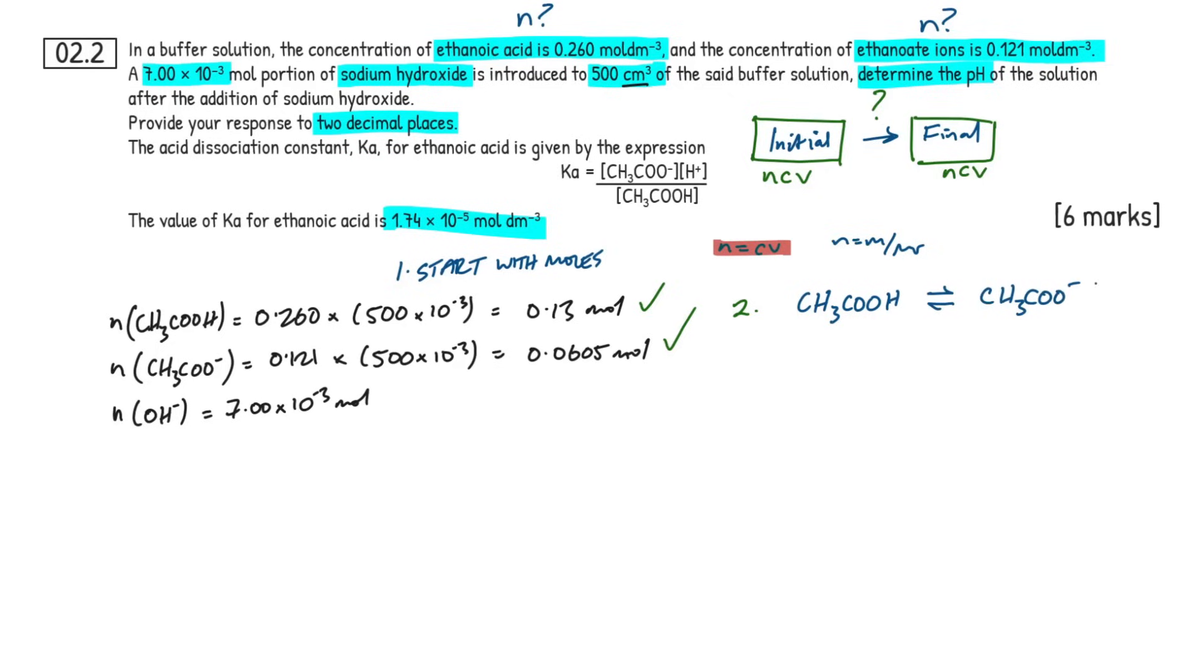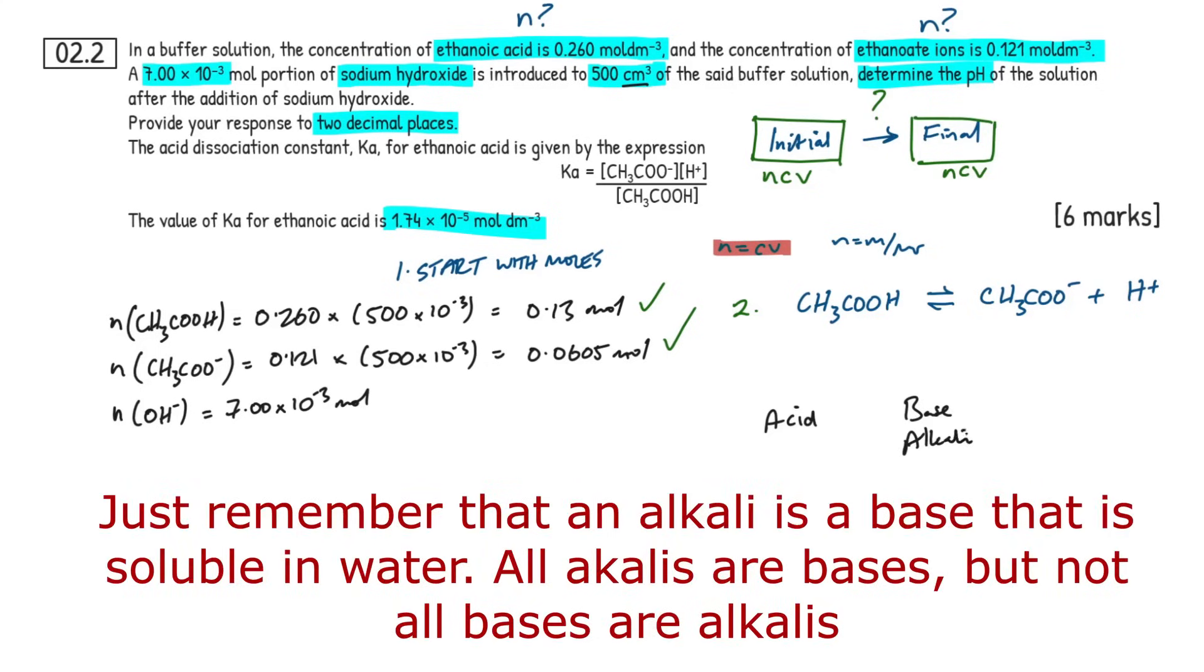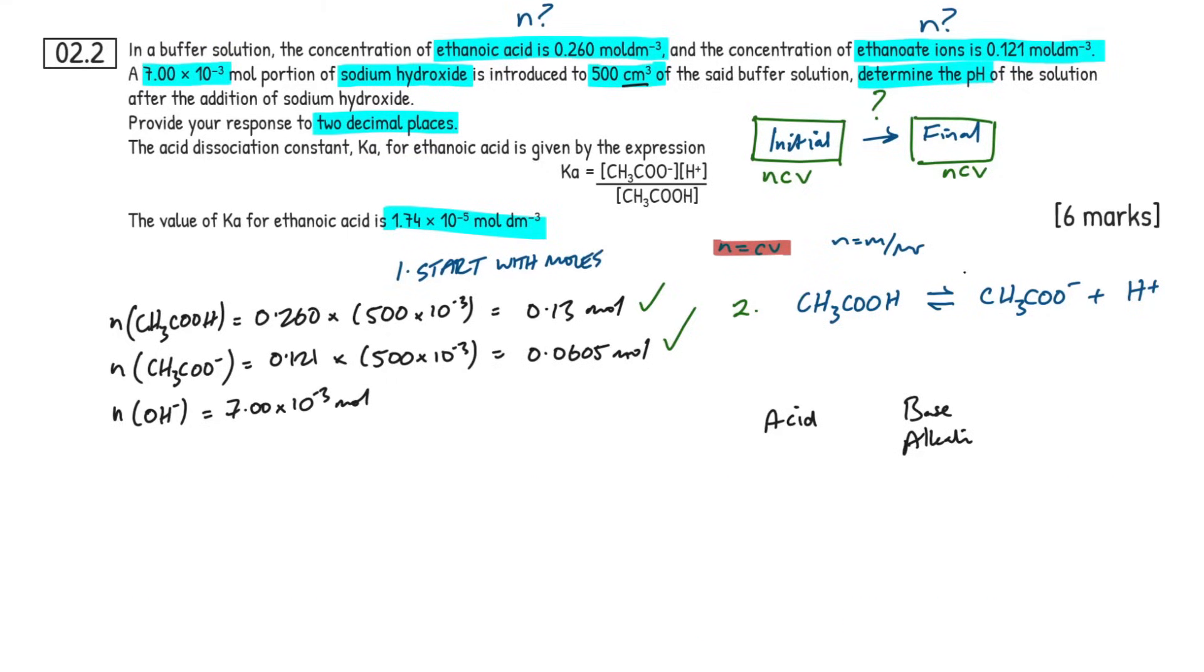So going back to what I said earlier, we're going to have moles, concentration, and volume. So I'll put NCV of initial and then you're going to have moles, concentration, and volume of final. And the only difference is we're adding a substance in here. In this case, it's a strong base. So going back to step two then, let's do a little bit of theory here so you guys can wrap your head around what's going on and it will help you so much when it comes onto all buffer calculations. So I'm just drawing out my equation here, CH3COOH in equilibrium with CH3COO minus plus H+.